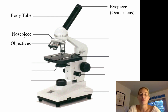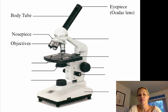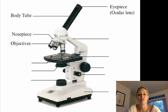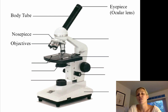The objective lenses run from low power to high power and there are typically about three objective lenses. The lowest power is usually about 4x magnification. The medium-sized objective lens is 10x magnification, and the largest objective lens is usually 40x magnification.